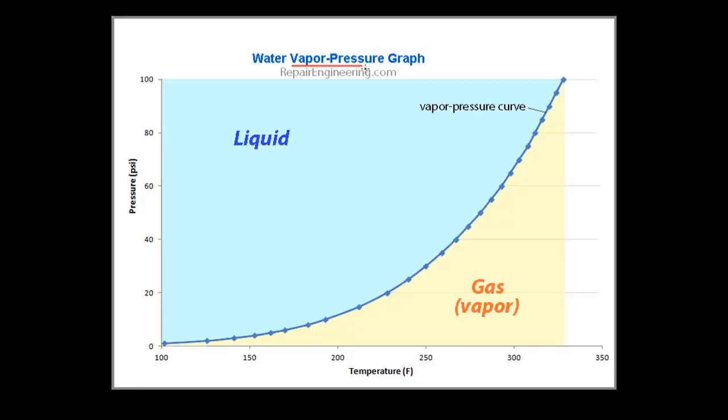This graph is known as a vapor pressure graph. A vapor pressure graph shows the relationship between the temperature and pressure of a fluid. This particular graph is produced from data that is specific to water. However, similar looking vapor pressure graphs are available for all fluids.